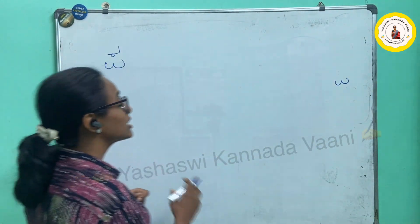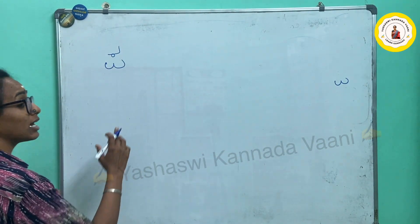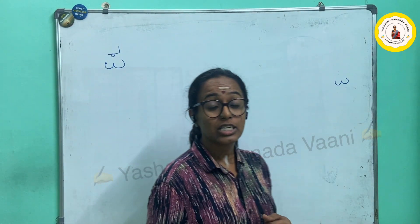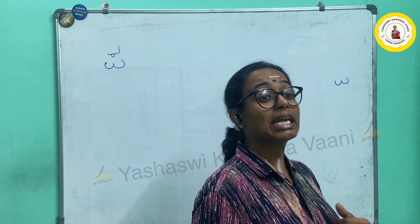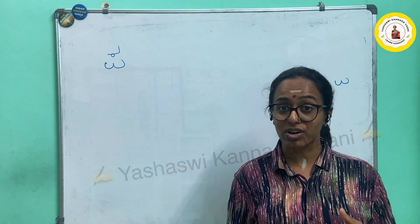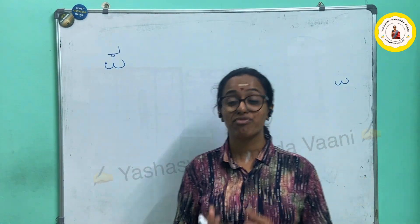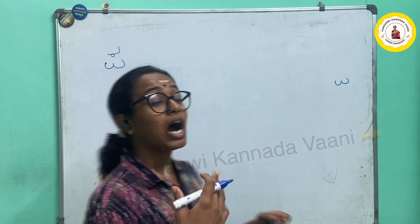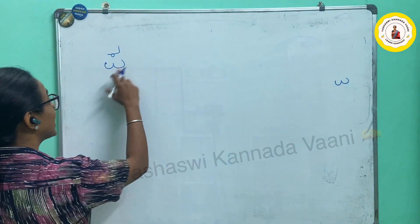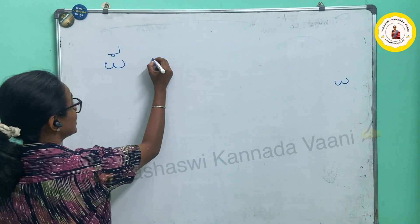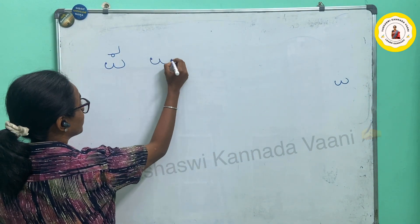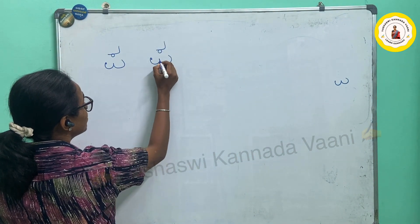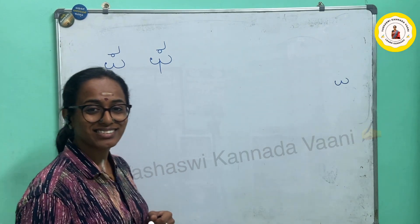The next one is similar to that, which is letter PHA. In Kannada we don't say 'FUR' — we don't have a FUR sound. It's a PUR. How do I write? Write as it is, and it's a BALA. That's it.